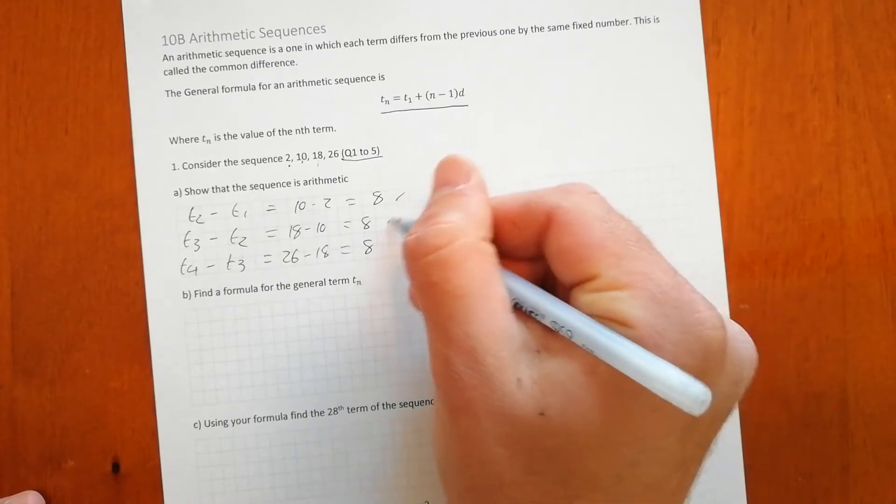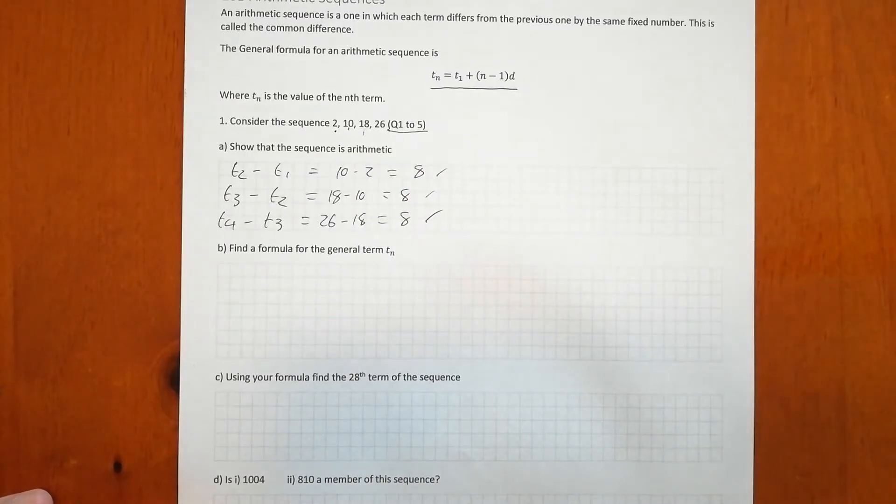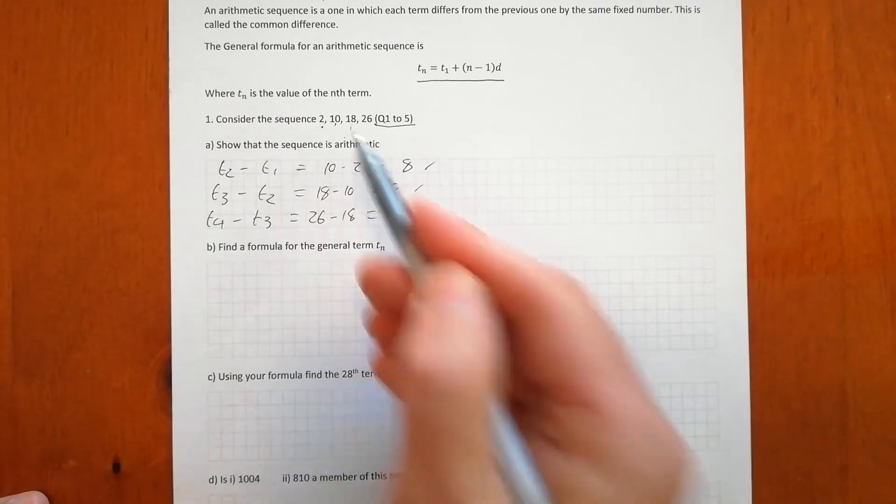So the difference each time is 8, it's increasing by 8 each time. Therefore, this sequence is arithmetic.